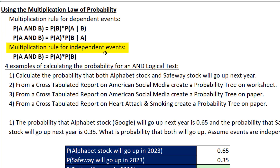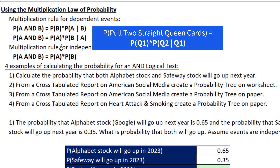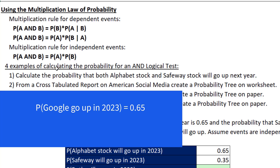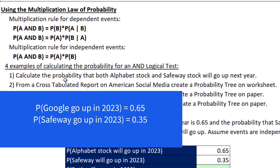If the events are not related — called independent events — then we simply multiply the two probabilities to get the probability that A and B occur. Once we have these rules, we can calculate things like the probability of pulling a queen and then a second queen given we've already pulled queen one, or if we have two independent events like two stocks you own that are not related, the probability that Alphabet Google stock will go up and the probability that Safeway stock will go up — multiply those two and you have the probability that both will go up.